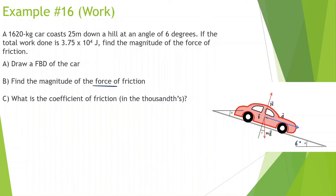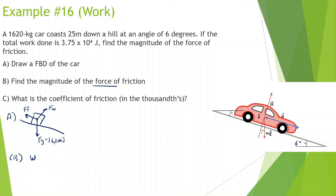Example 16: a 1,620 kg car coasts 25 meters down a hill at an angle of 6 degrees. The total work done is 3.75 times 10 to the 4th joules. Find the magnitude of the force of friction. Free body diagram: force of gravity straight down equals 16,200 N, force normal perpendicular upward, and force of friction opposing motion. Work total equals 37,500 joules. Work done by normal force is zero because it's at a 90 degree angle to displacement.